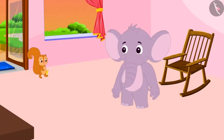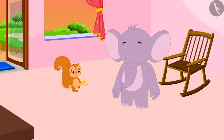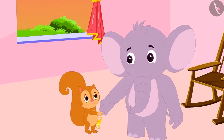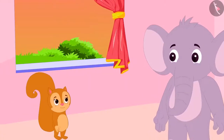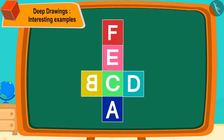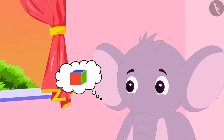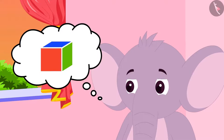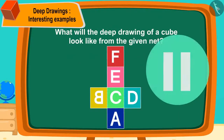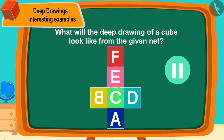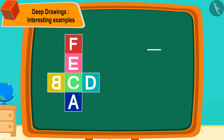Chanda went straight to her friend Appu Elephant's house with the trophy she won at the competition. Appu congratulated her on winning. Now they are both playing a game. Chanda has made a cube net on a cardboard, and Appu has to make its deep drawing. Can you tell what this deep drawing will look like? You can find the answer by pausing the video. You can make this deep drawing in this way too.